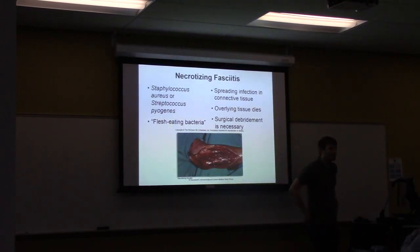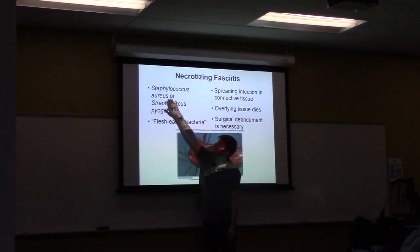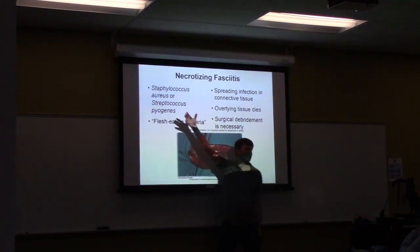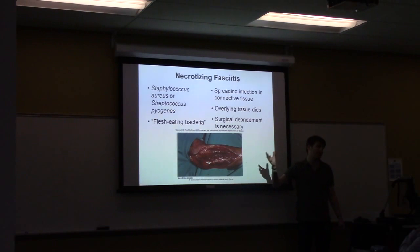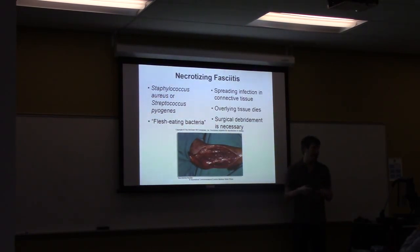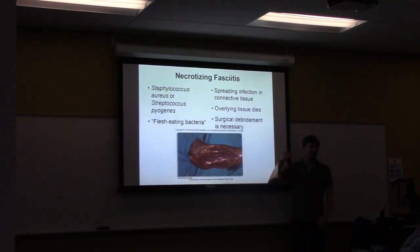MRSA is just Staphylococcus aureus that's resistant to methicillin antibiotics, making it more difficult to treat. VRSA is vancomycin-resistant Staphylococcus aureus, which is even more resistant — almost impossible to kill. If you get VRSA and necrotizing fasciitis occurs, you just keep cutting away the infected tissue until it's gone.